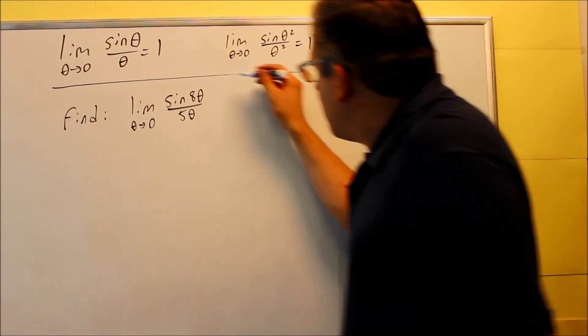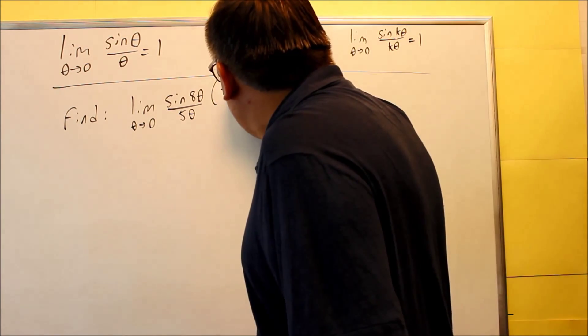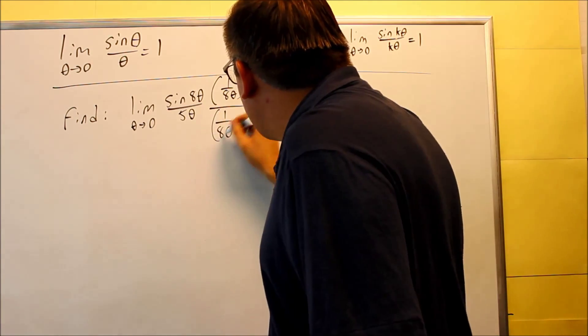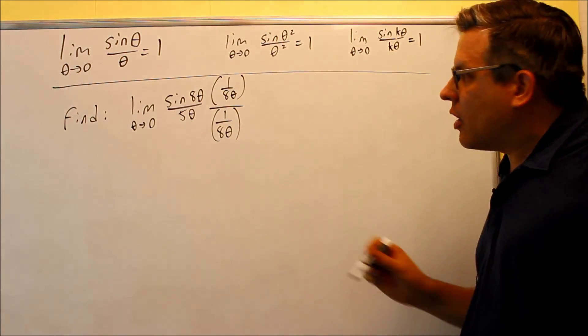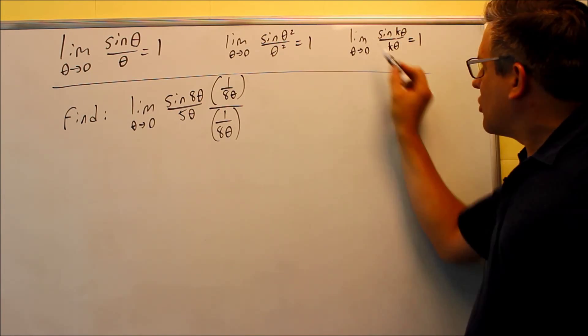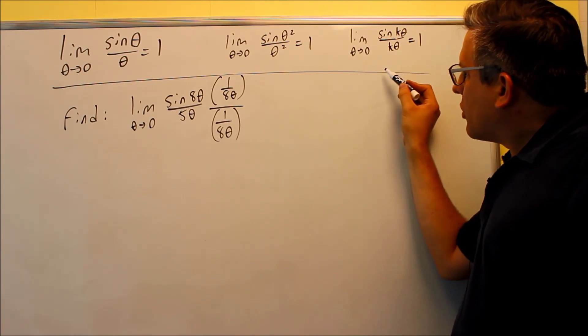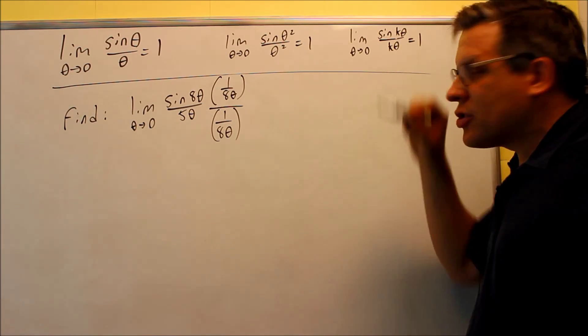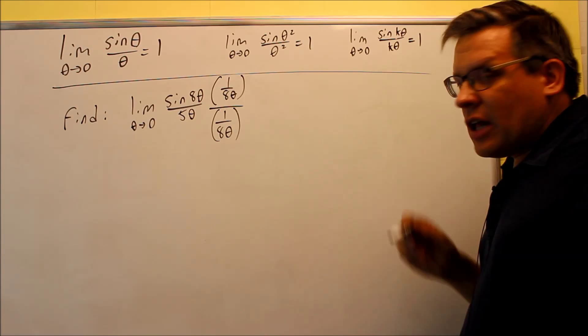The way that we can do this is we're going to multiply top and bottom by one over eight theta. Now why are we choosing eight theta? That's because we want to end up, when I multiply these, I want to create this over here. And again, this as a result, eight theta and eight theta have to match, and then that way I can apply this principle and know that that's going to go to one.